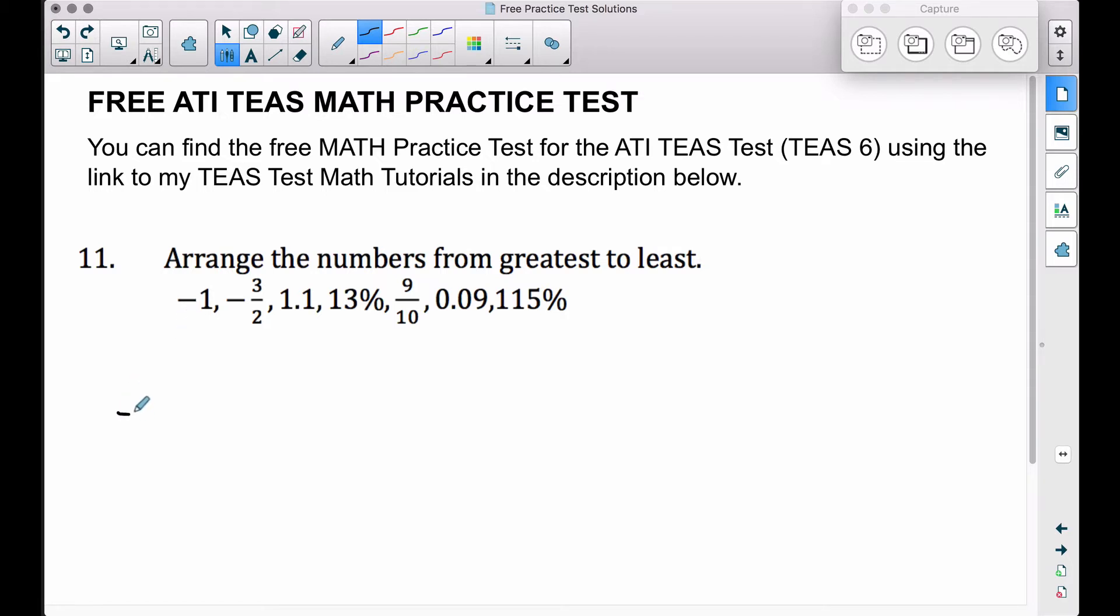Right here, negative one, let's think of that as negative one dollar. I'm going to add two zeros there. For this second one, negative three over two, if you type in three divided by two, you get negative one dollar and fifty cents.